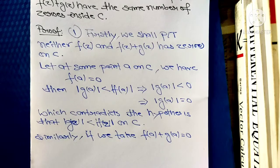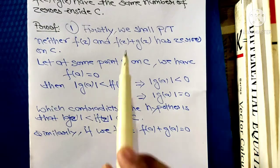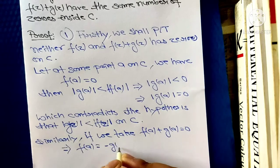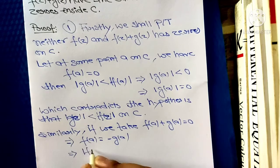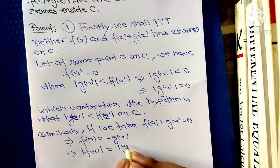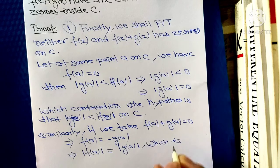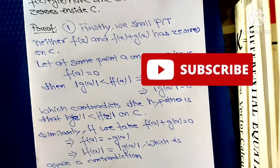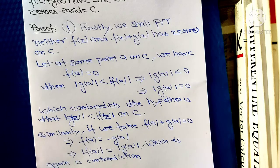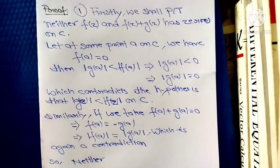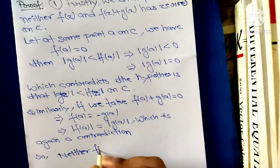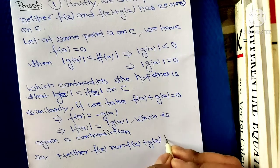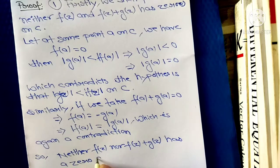This is a contradiction. Similarly, if we take f(A) plus g(A) equals 0, then f(A) equals minus g(A). Taking modulus on both sides implies |f(A)| equals |g(A)|, which is again a contradiction. So neither f(z) nor f(z) plus g(z) has a zero on C.